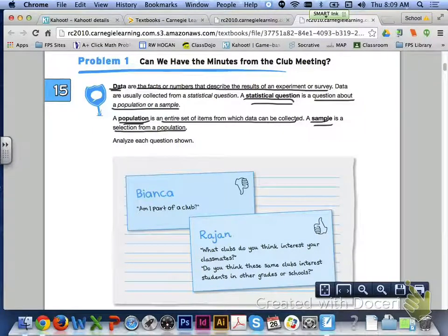Let's take a look at problem 1 at the top of page 998. It tells us that data are the facts or numbers that describe the results of an experiment or survey. Data are usually collected from a statistical question. A statistical question is a question about a population or a sample. A population is an entire set of items from which data can be collected. A sample is a selection from a population.